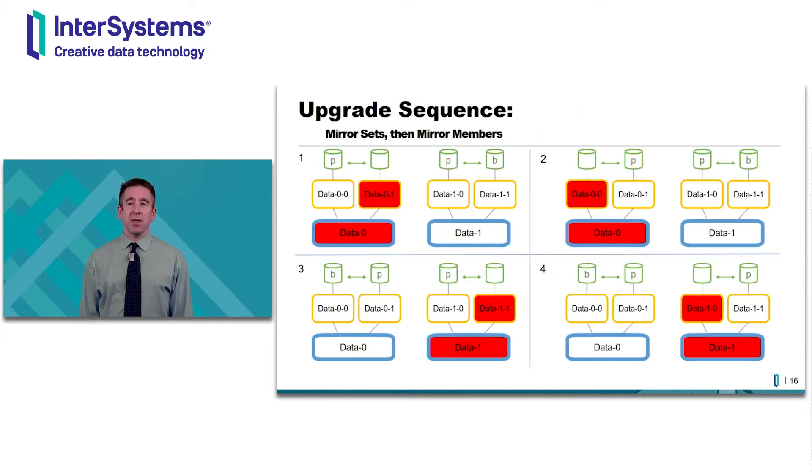In the case of mirroring plus sharding, we're going to visit each stateful set. And within each one, we update the pods just as in the non-sharding case. So first is stateful set data 0, and within that, pods data 0-1 and data 0-0. Then we upgrade stateful set data 1, and within that, pods data 1-1 and data 1-0.